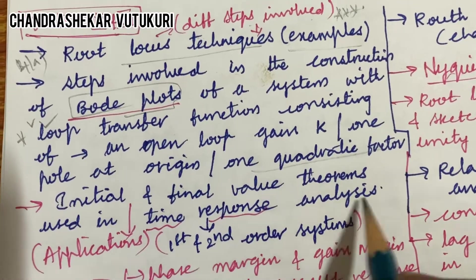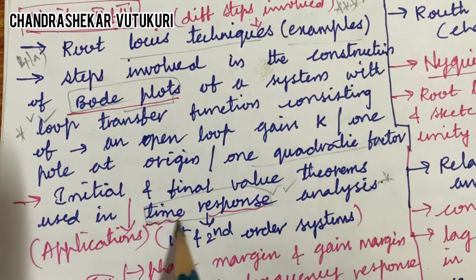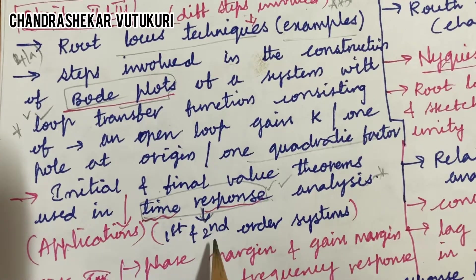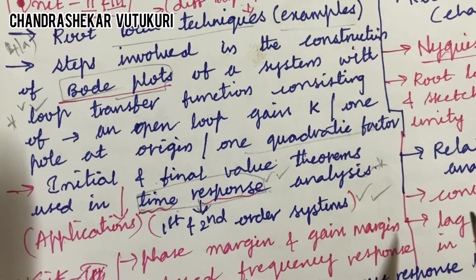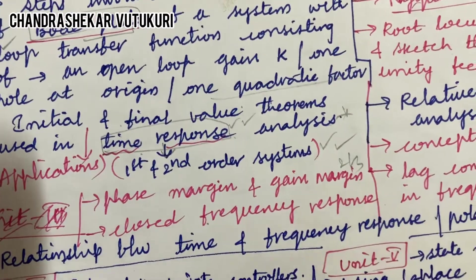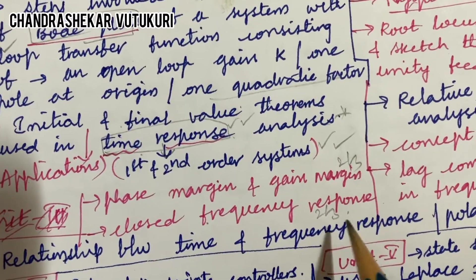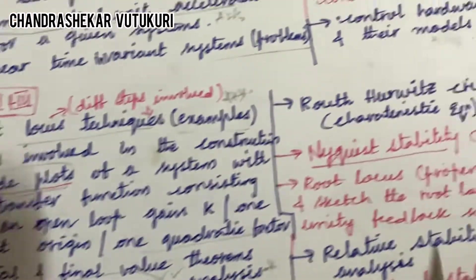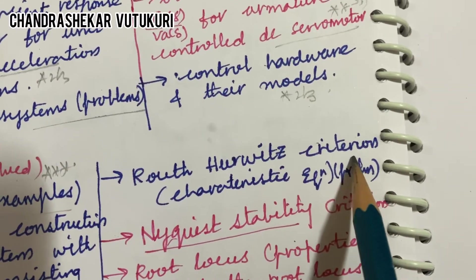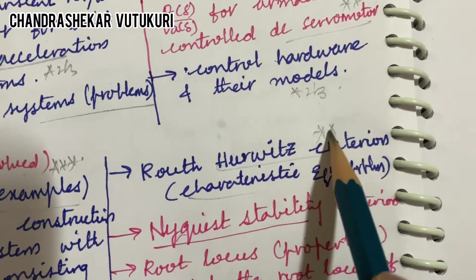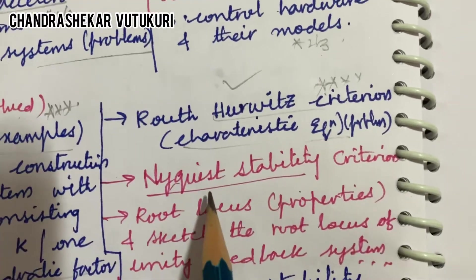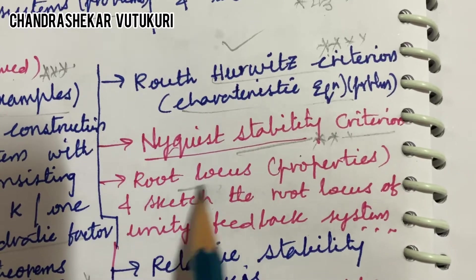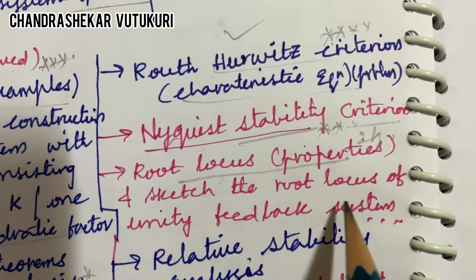Initial and final value theorems used in time response analysis — related to time response you are going to get a problem as well as a theory question on applications of initial and final value theorems. Related to time response, you are also supposed to work on first and second order systems. Phase margin and gain margin may be a 2-mark or 3-mark question. Closed loop frequency response may also be a 2-mark question, and the differences among them may appear in 3ab, 4ab, or 5ab. Routh-Hurwitz criterion in the characteristic equation and related problems is said to be a compulsory and definite question. Nyquist stability criterion is also a topmost question along with its characteristic equation and problems.